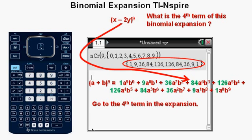We'll go to the fourth term and plug in X for A and negative 2Y for B. Plugging in X for A and negative 2Y for B, we have 84X to the sixth power times negative 2Y to the third power. And simplifying, since negative 2 to the third power is negative 8, we have 84 times negative 8X to the sixth power times Y to the third power.